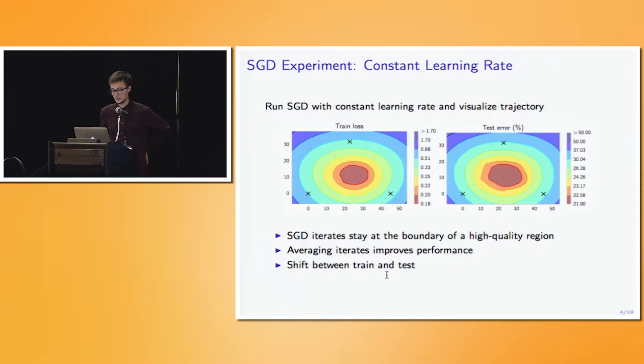Throughout the talk, we'll often need to visualize the trajectories of SGD in the weight space. The way we are going to do this is we fix three networks that are shown here with crosses in the slide, and we'll consider the two-dimensional plane consisting of all the affine combinations of these three networks. We are selecting a two-dimensional plane that is passing through these three networks in the weight space. And we then visualize the train loss and test error restricted to this two-dimensional plane.